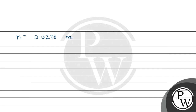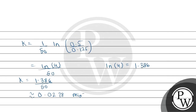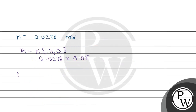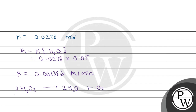So k is approximately 0.0924 per minute inverse. Now, the rate of decomposition of H2O2 equals k times the concentration of H2O2. When the concentration of H2O2 is 0.05 mol/L, the rate of decomposition is 0.0924 multiplied by 0.05, which gives us the rate of decomposition of H2O2.